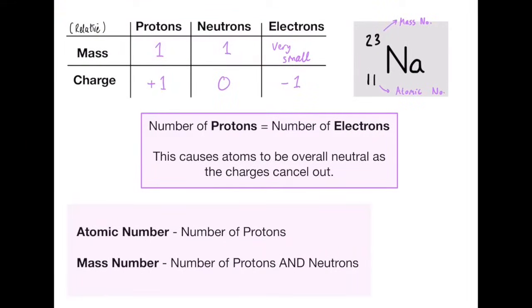Starting off, we have the relative mass and charge of protons, neutrons and electrons. This table I would highly recommend you remember. Protons are positive in charge with the plus one, neutrons are neutral, and then the electrons are negatively charged with a very small mass. It's very close to zero, often we would just say that the mass is negligible, so basically nothing.